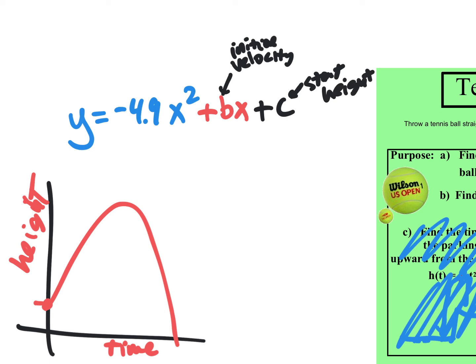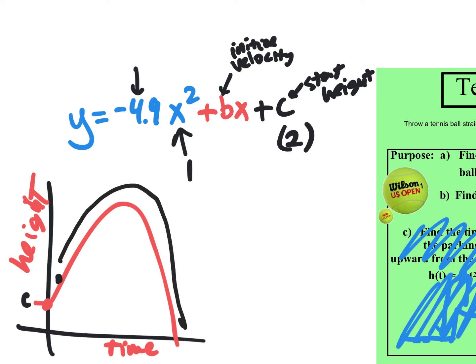We know the initial height — I told you all you could use 2 meters. Since this number is in meters, we've got to be consistent and always use meters. That means x is any given time. So if you want to figure out where the ball would be at one second, you would just stick a 1 right there, and you'd be able to tell exactly where the ball would be on its path as it's going up and back down again.